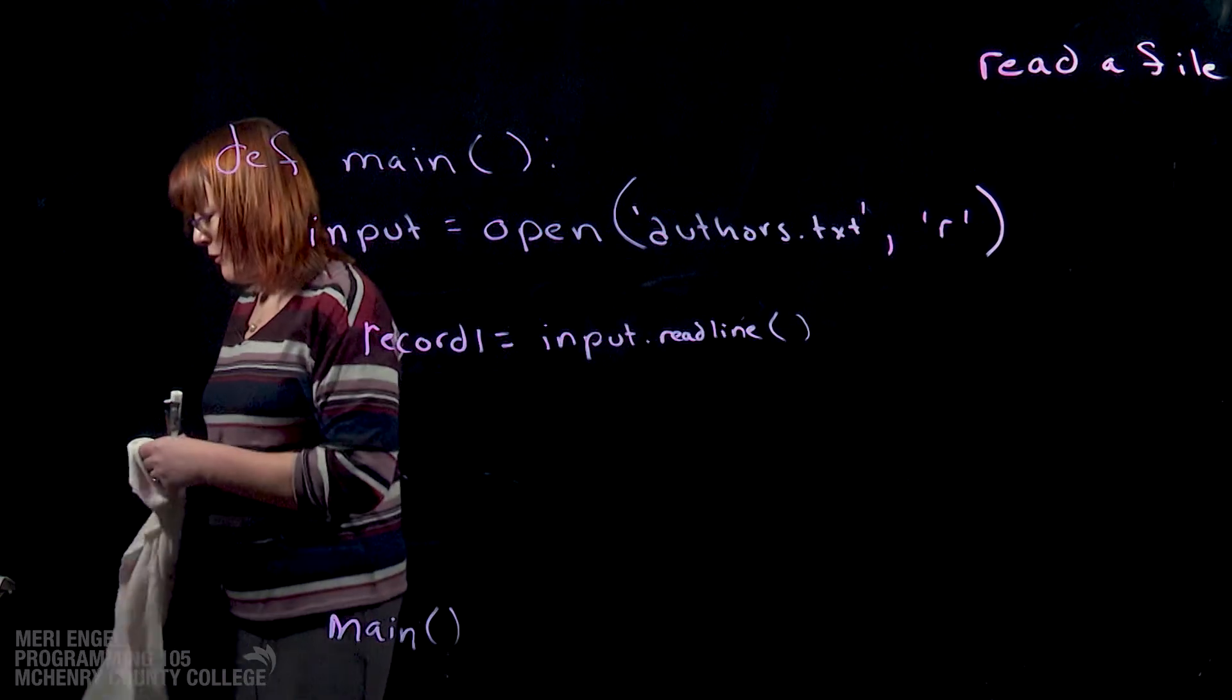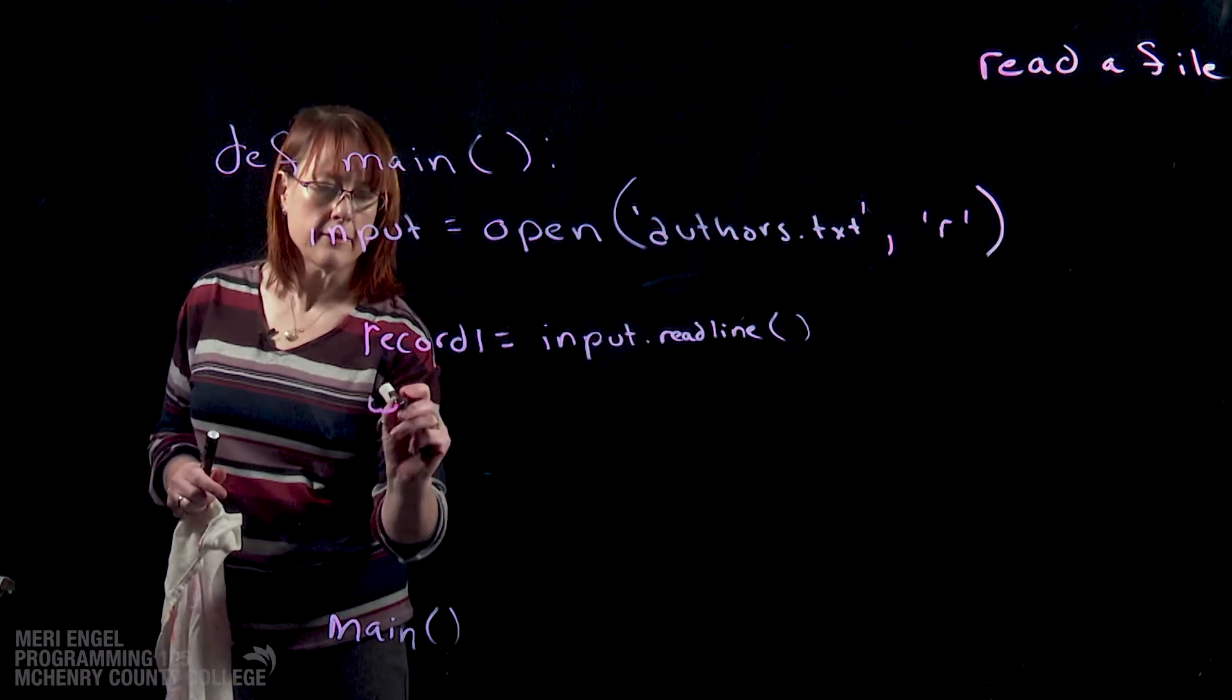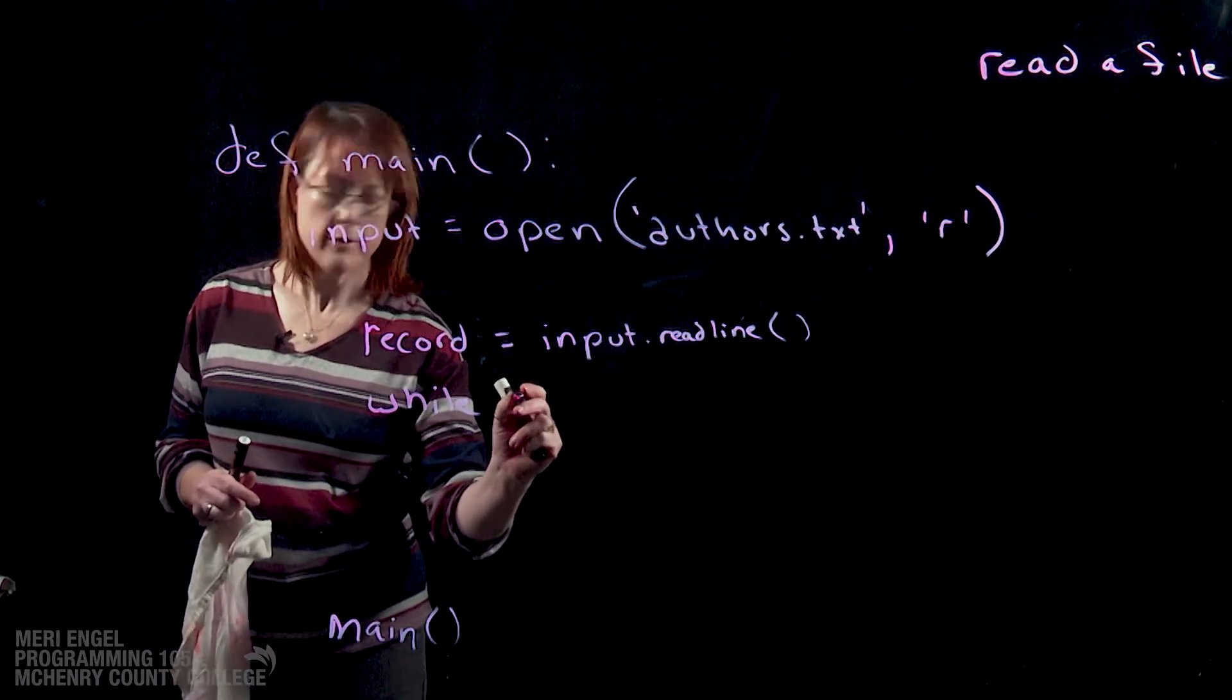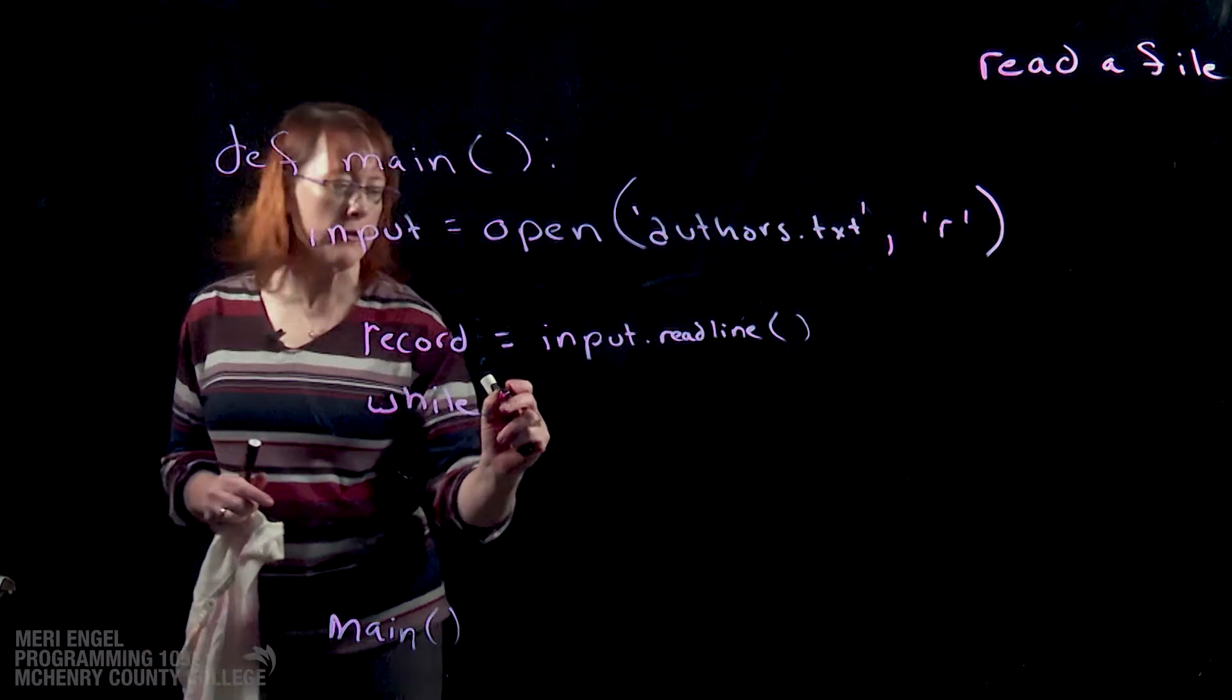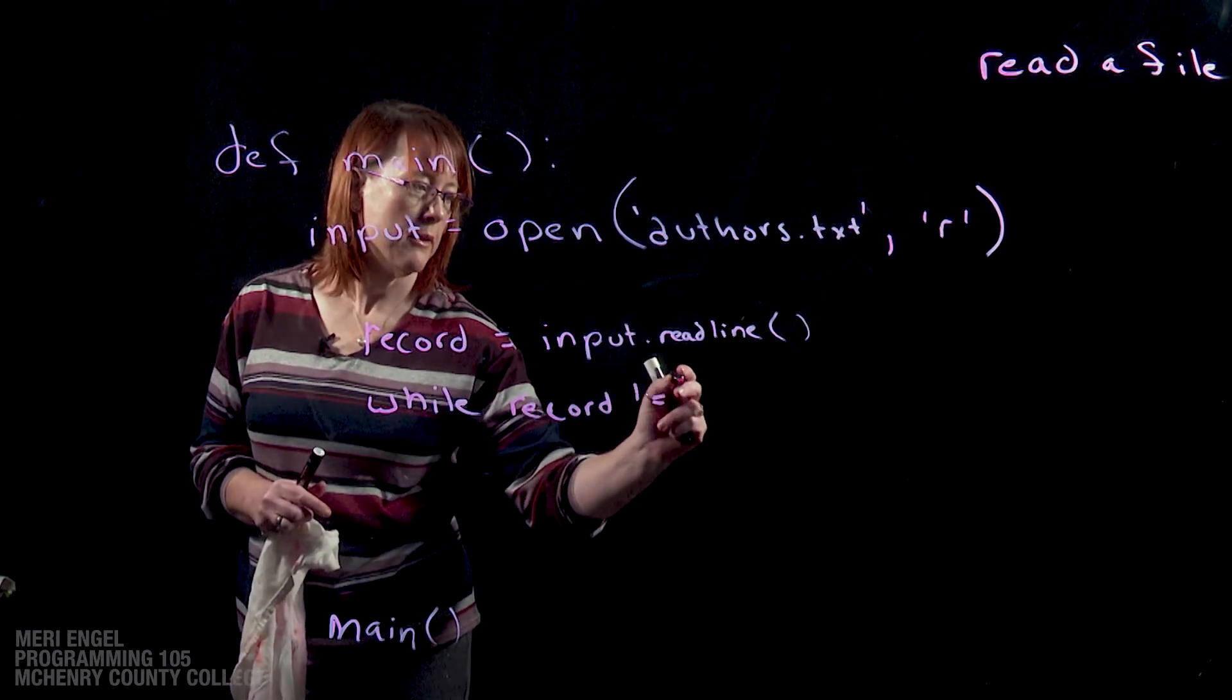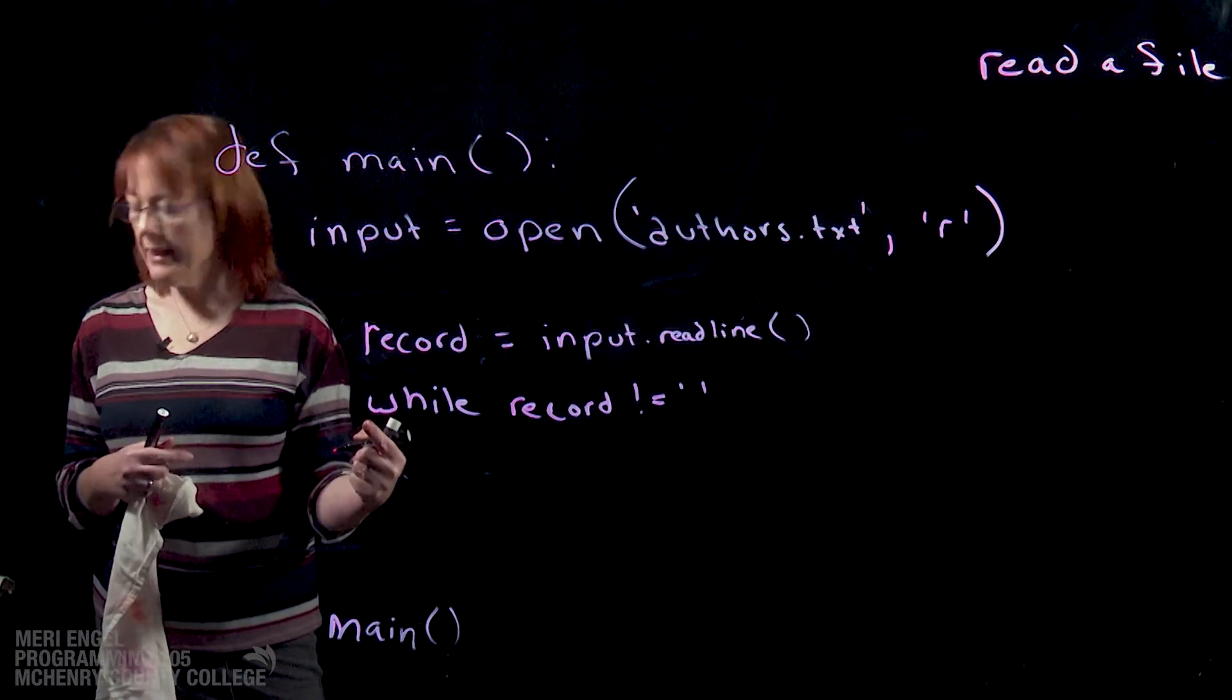So when we're going to do it in a loop, we're going to do a while, and so this would not be record1, it would just be record. So we would do while record not equal, and that's just single quotes, so no value. That's checking to see if we've hit the end of the file.